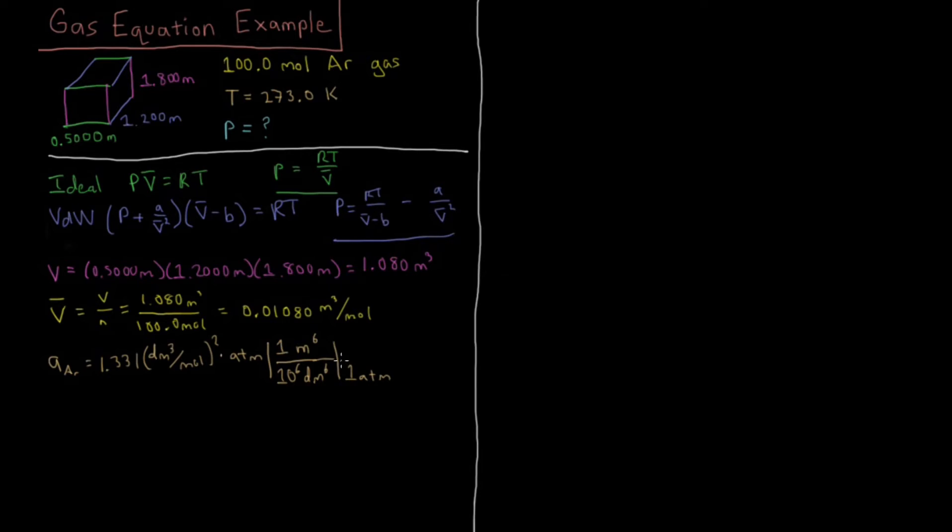For atmospheres, one atmosphere equals 101,325 Pascals. So this ends up being 0.1349 meters cubed per mole squared Pascals. That's our final unit for A for argon.